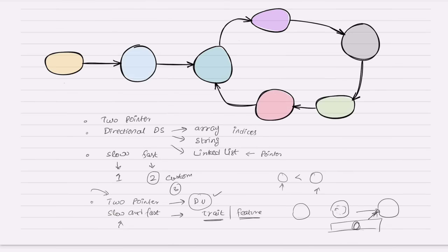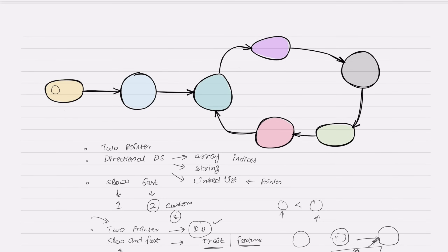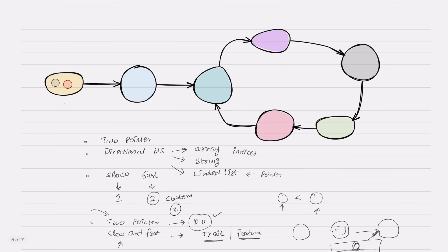Let me show how the slow and fast pointers move and detect a cycle. Let's say the slow pointer is here and the fast pointer is here. At the very start, they will both be on the very first node. In many implementations, you can place the fast pointer on the second node at the start, but here we put them on the same node.